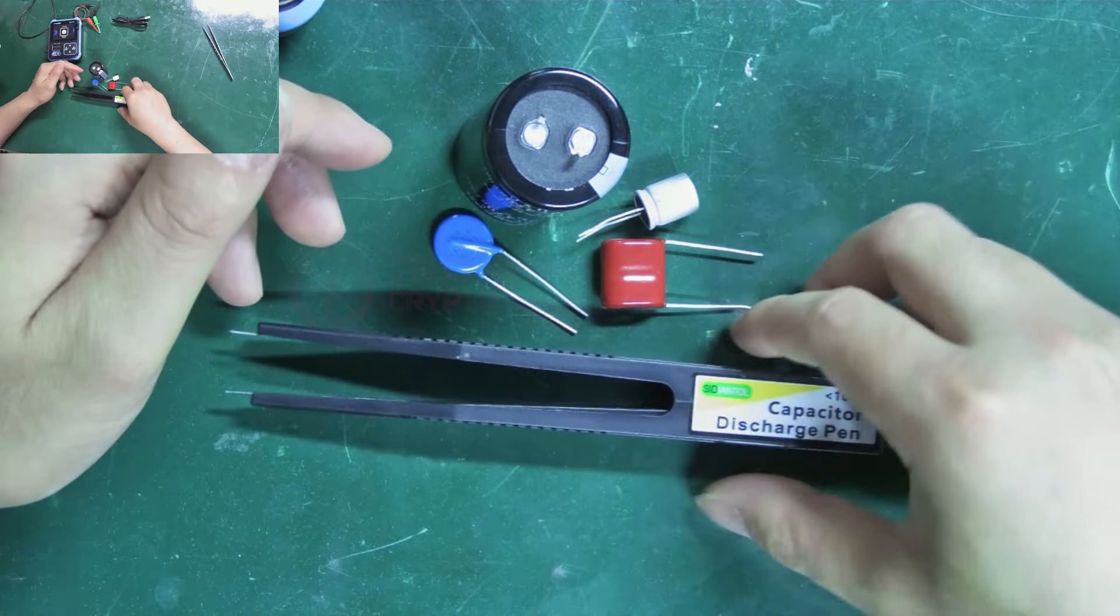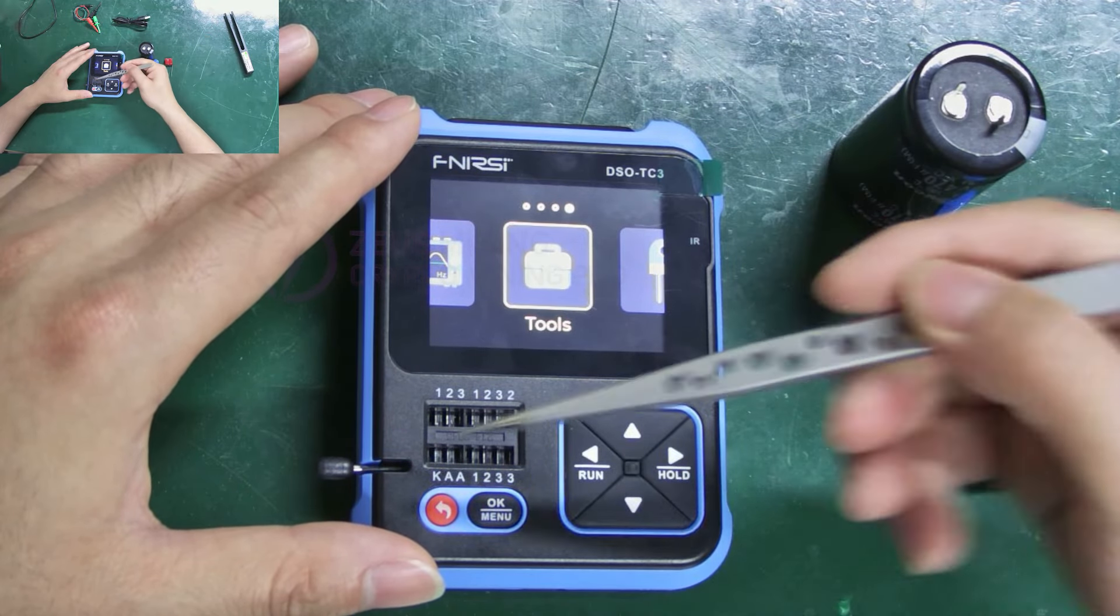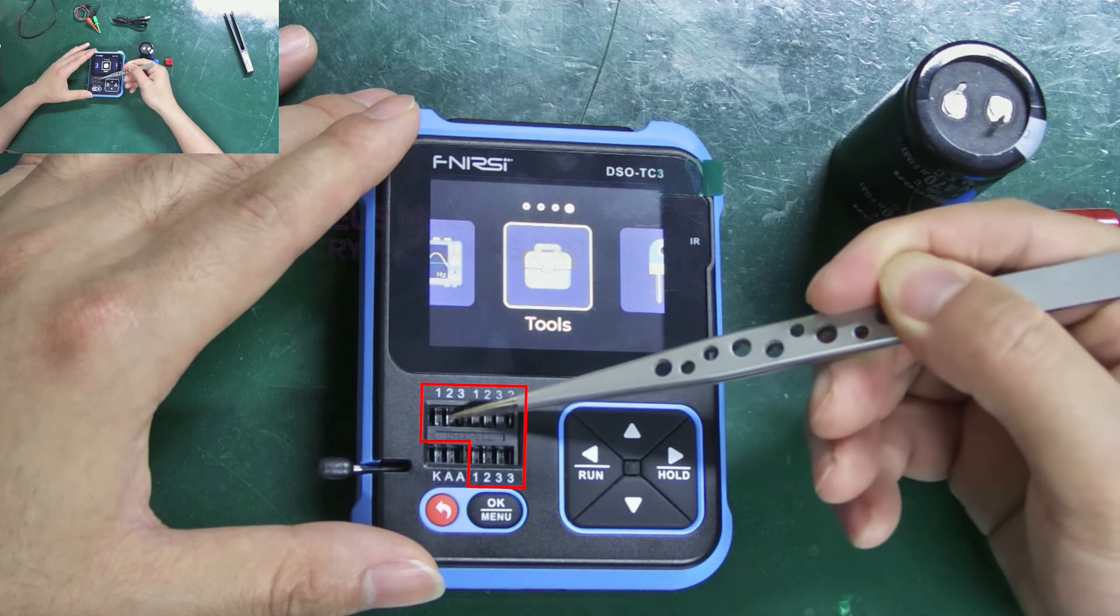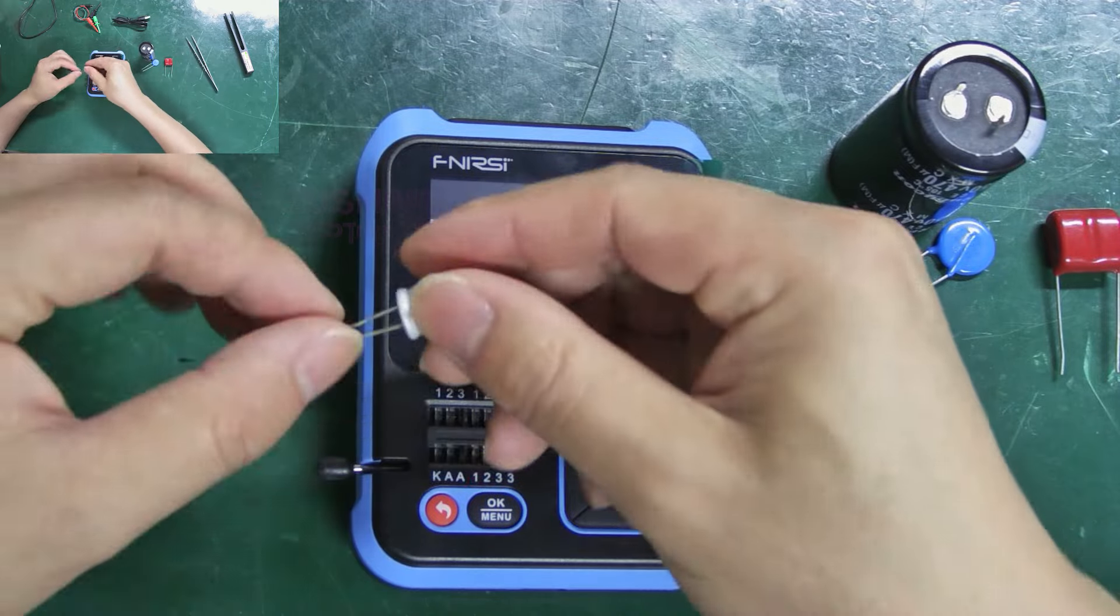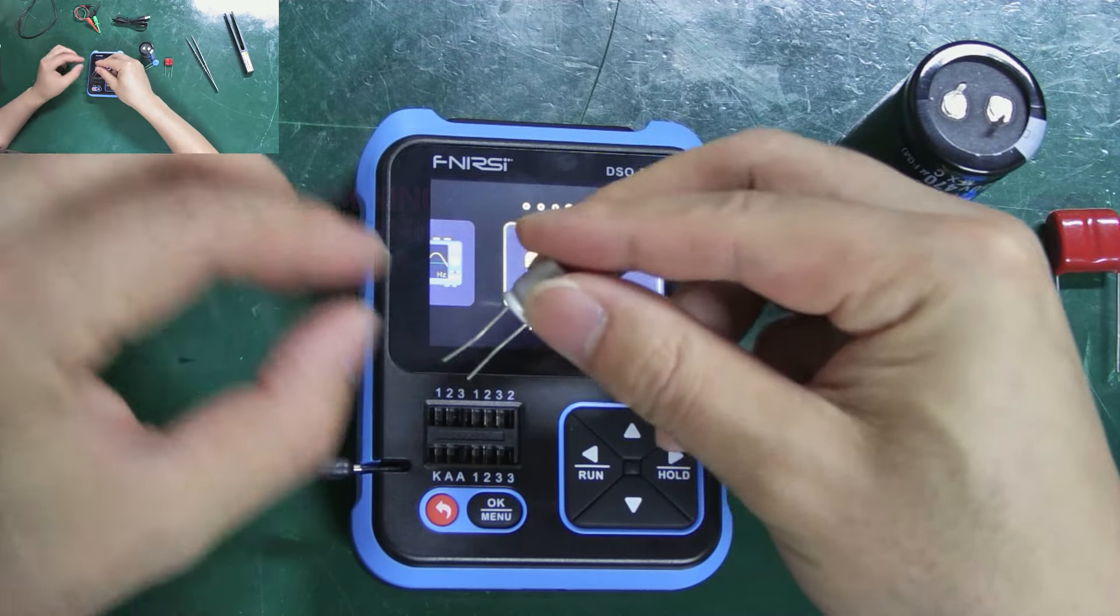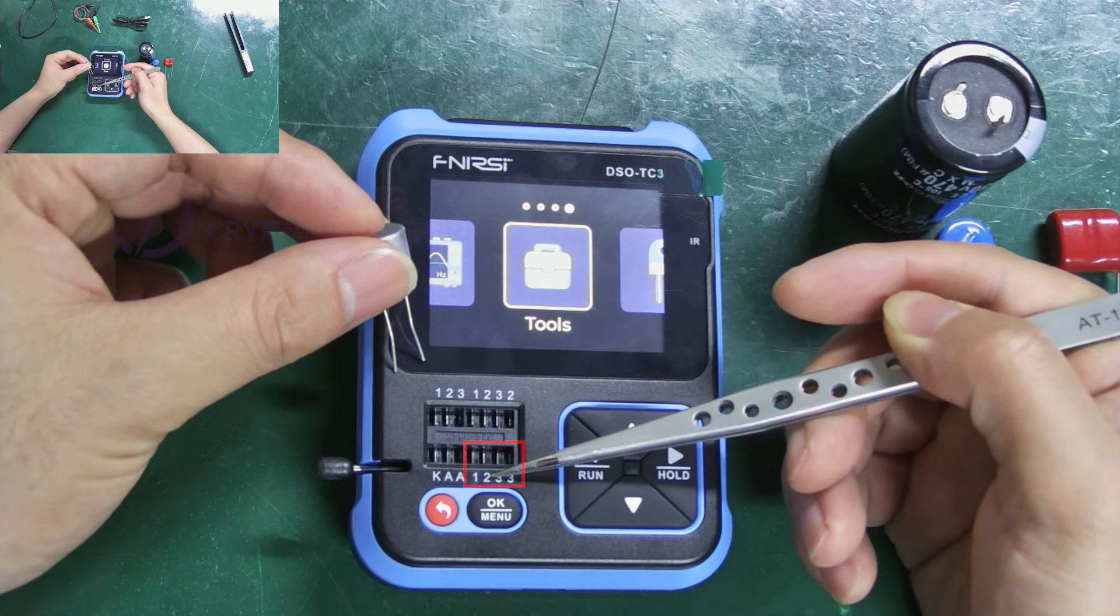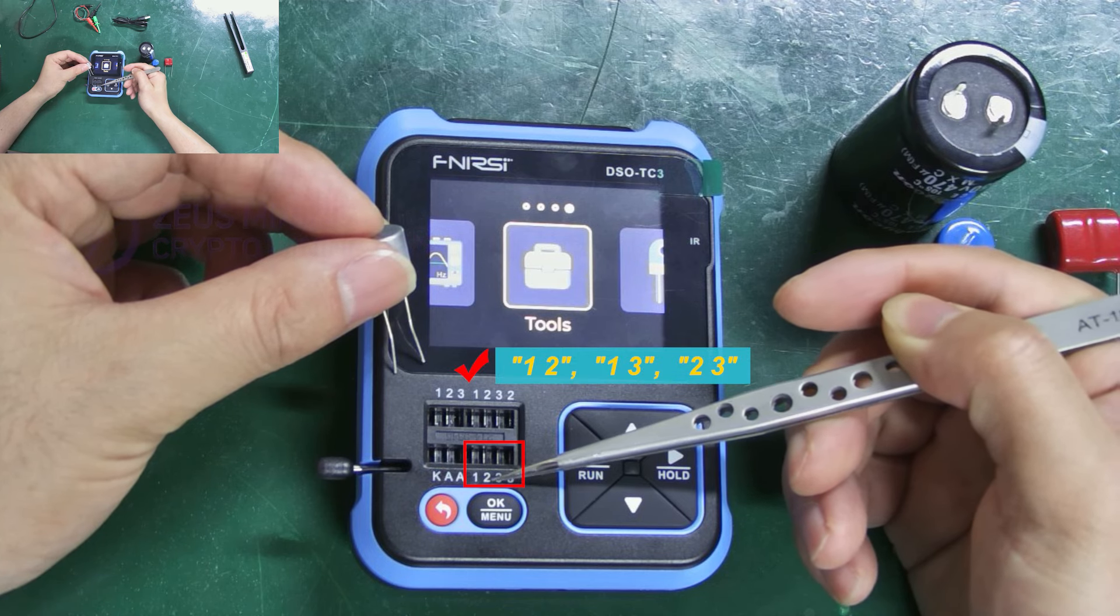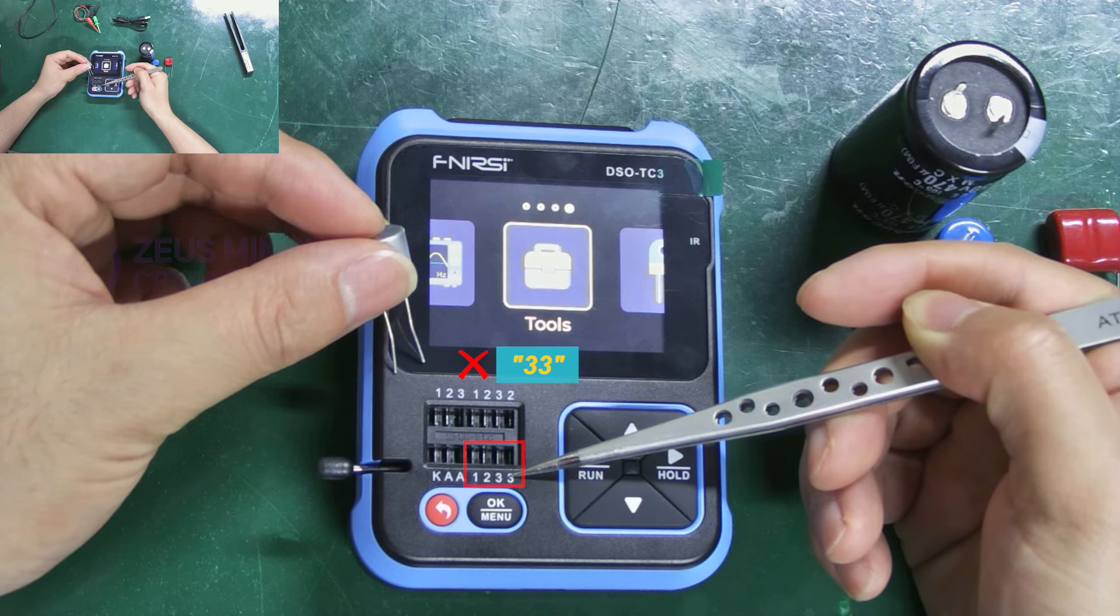For this type of electrolytic capacitor, we can choose three hole positions: one, two, three. Its two pins need to be inserted into different numbered holes. For example, for the one-two-three holes, we can choose to insert them into one-two, one-three, or two-three. But if we choose three-three, we won't be able to test its correct capacity.